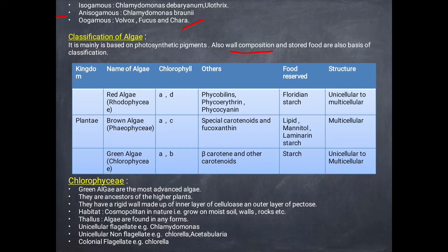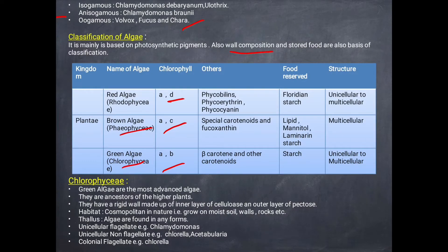Algae are classified into three classes: red algae (Rhodophyceae), brown algae (Phaeophyceae), and green algae (Chlorophyceae). Red algae have chlorophyll A and D. Brown algae have chlorophyll A and C. Green algae have chlorophyll A and B. Chlorophyll A is the universal pigment. Other pigments: red algae have phycobilin — phycoerythrin or phycocyanin.